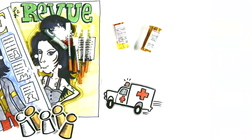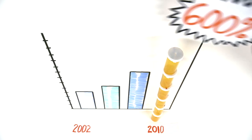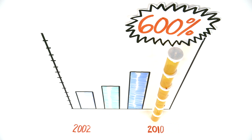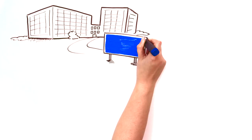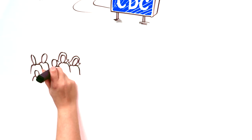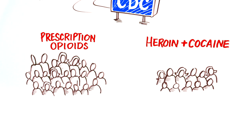Combine all this with the fact that opioid prescriptions have gone up by more than 600% between 2002 and 2010, and we have a problem. According to the Center for Disease Control and Prevention, or the CDC, we have more people addicted to prescription opioids than heroin and cocaine combined.